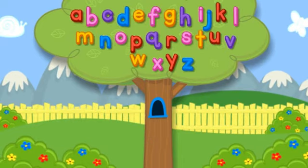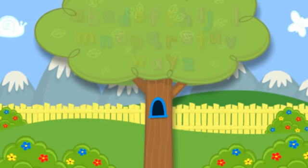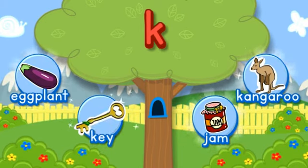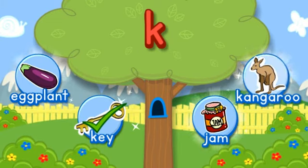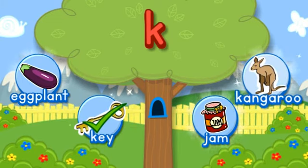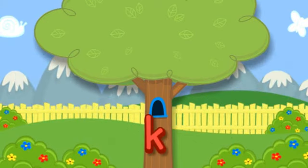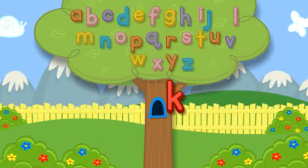Click the tree to shake it. K. Choose the pictures that start with the letter K. K-K-Key starts with K. K-K-K-Kangaroo starts with the letter K. Hooray! You did it! Click the letter to put it in the tree. K.